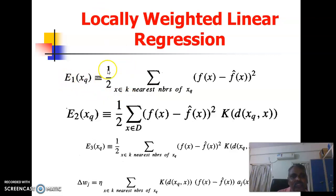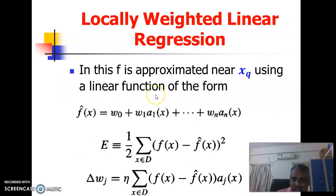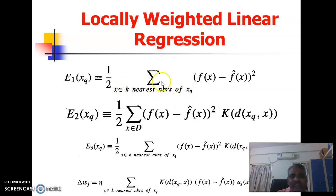The first expression E1(x_q) = (1/2) * sum over x in k-nearest-neighbors of x_q of [f(x) - f-cap(x)]^2. The only difference between this expression and the global one is that this is local — we are using only the k nearest neighbors, a lesser number of training examples, not all training examples.